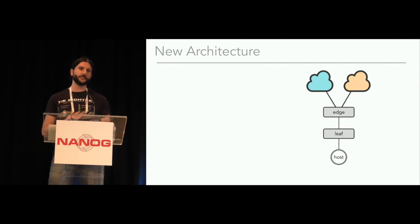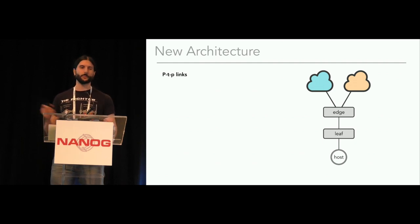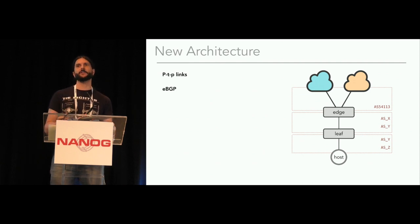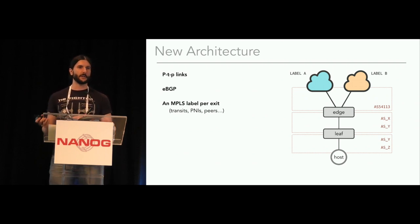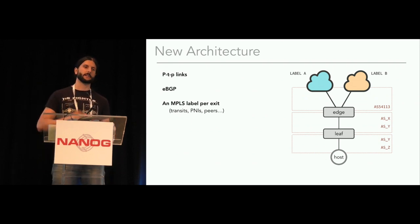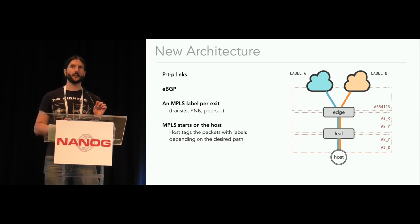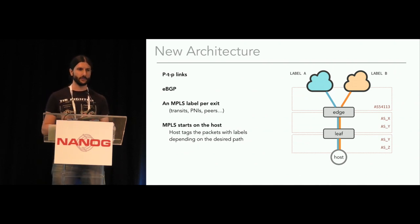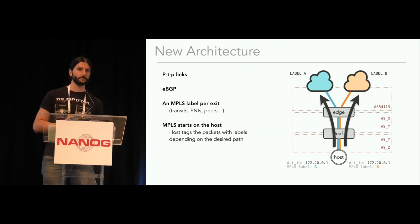Now I'm going to describe the new architecture using the same leaf-edge network: one host, two transits. Now we have only point-to-point links — no more Layer 2 shared between transits or multiple devices. We run eBGP down to the host instead of iBGP. We assign an MPLS label for each egress peer — any circuit that takes you out of the network has a dedicated MPLS label. And we run MPLS on the host. So if the host wants to send traffic via the blue transit, it only has to select the MPLS label corresponding to that transit.